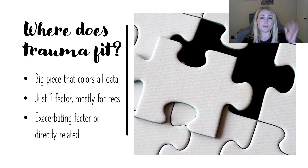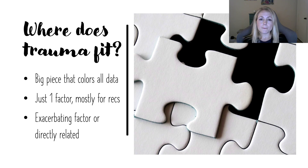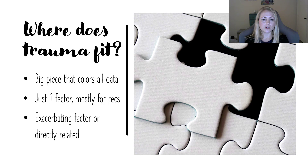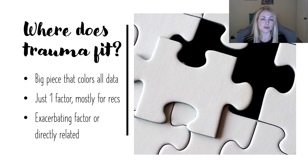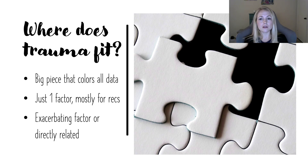Trauma may be a really big piece — maybe we spilled something on the puzzle and it's just affecting everything. That's sometimes going to be the case when you have someone with a really chronic sexual abuse history. Of course, that's going to color all the data. Maybe, though, it's just one factor and will mostly impact your recommendations and not really any decisions about eligibility or disability condition. And sometimes it could be one factor that's exacerbating whatever disability condition is there, or it might be directly related. Maybe there is a direct correlation between some traumatic grief incident and the development of really severe emotional and behavioral problems. We don't rule that out as someone who might be eligible.